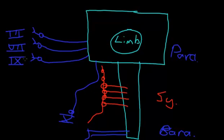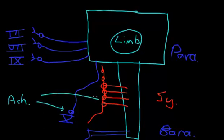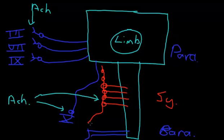All of these ganglia have acetylcholine as their neurotransmitter. There are no differences between parasympathetic ganglia and sympathetic ganglia in that regard — they both use acetylcholine. The differences between the systems are at the endpoint neurotransmitter, which for the parasympathetic is acetylcholine, whereas for the sympathetic system the endpoint is noradrenaline.